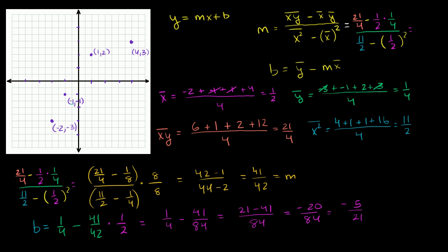So our regression line is y equals 41 over 42 times x minus 5 over 21. The y-intercept negative 5 over 21 is a little bit less than negative 1 fourth, and the slope is a little bit less than 1 — so our line is going to look a little flatter than y equals x. In the next video, we're actually going to calculate the r-squared for this line: how much of the total variation in the y-values can be explained by the variation in the x-values.